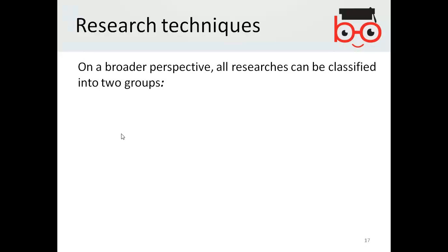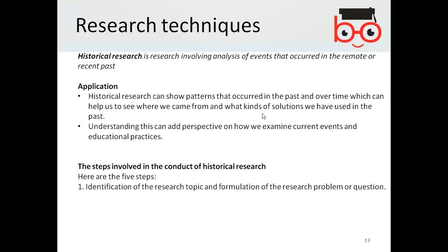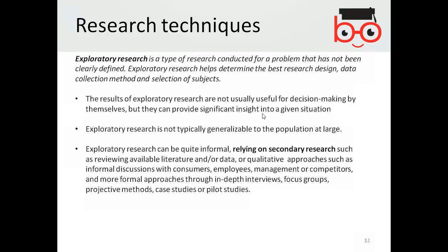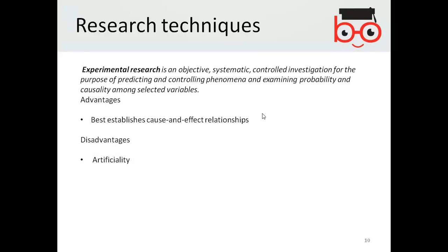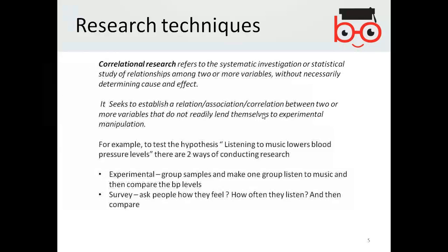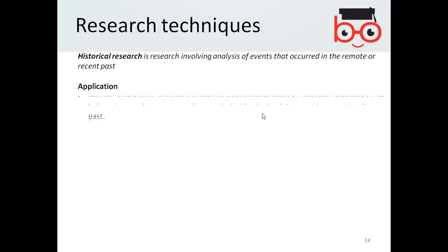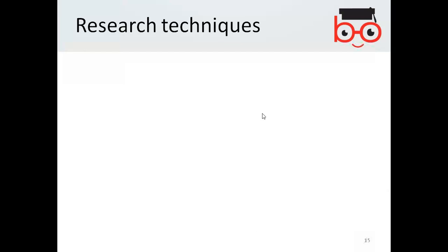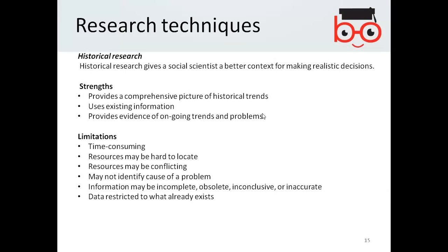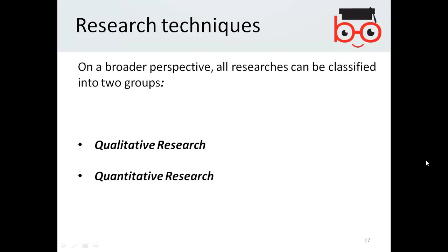On a broader perspective, all research can be classified into two groups. All the types of research techniques discussed — basic research, experimental research, exploratory research, applied research, correlational research — are categorized into two ways: qualitative and quantitative.